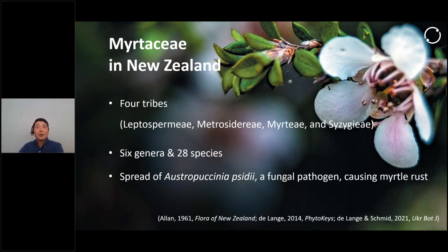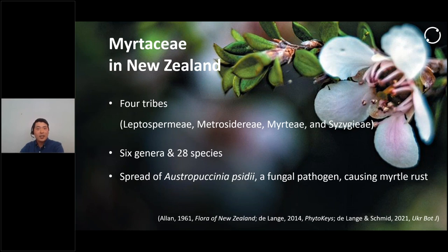In New Zealand, there are four native Myrtaceae tribes: Leptospormi, which includes Manuka and Kanuka; Metrosidori, which includes Pohutukawa, Southern Rata, Northern Rata, and some Metrosiderous woody climbers; Myrtei, which includes Lofomotorus and Neomotorus; and Syzygieae, that includes a single species in New Zealand, Syzygium maire. These make up six genera and 28 species of trees and woody climbers.